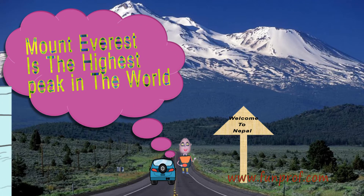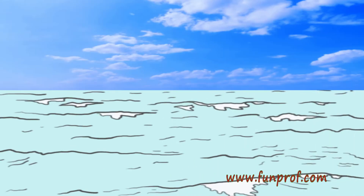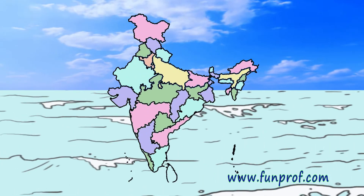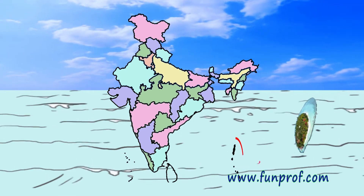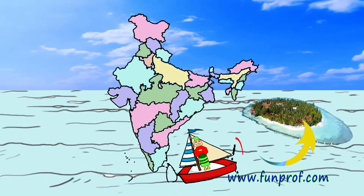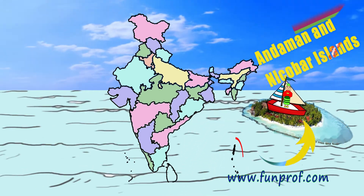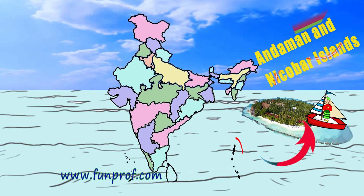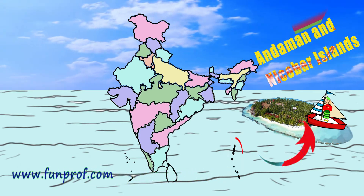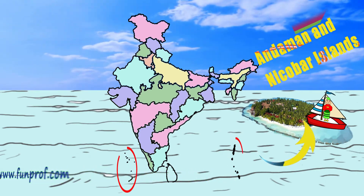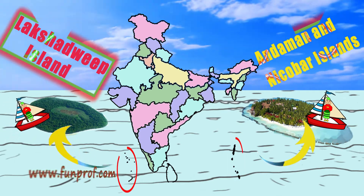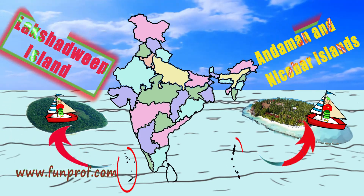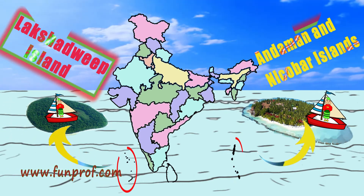Now about islands. There is Andaman and Nicobar island in the Bay of Bengal in the east. We have Lakshadweep Islands in the Arabian Sea in the west.